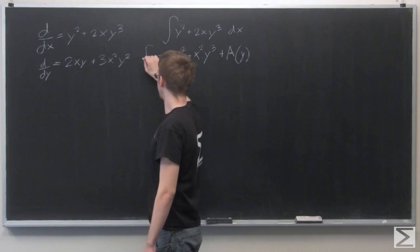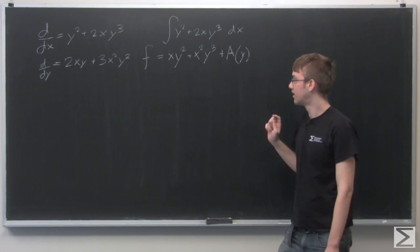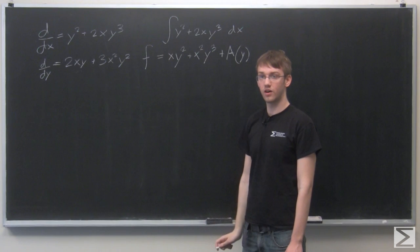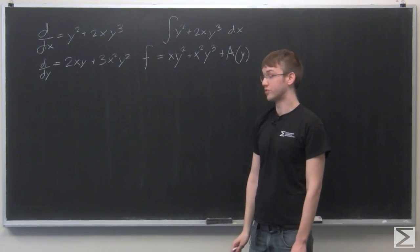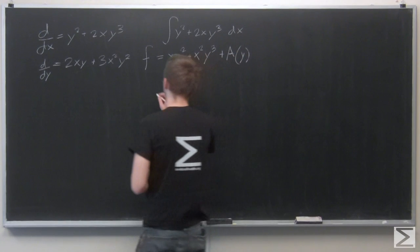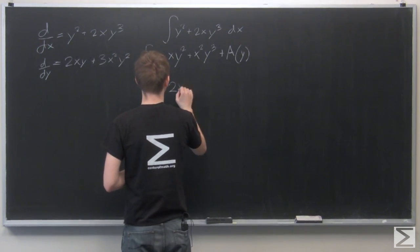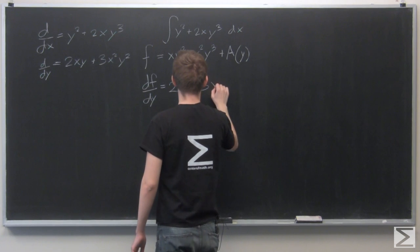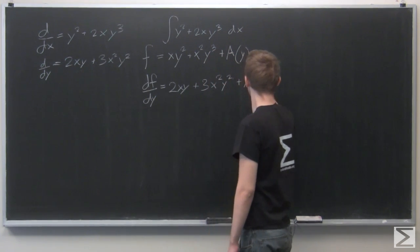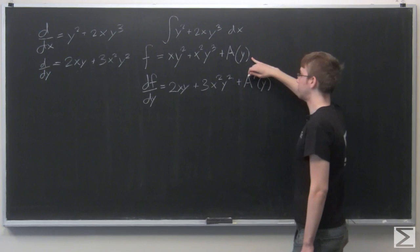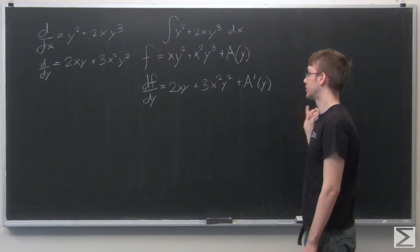So this is our potential function so far, but we've only integrated with respect to x. We need to get what this y term is. If we take the partial derivative of our current f with respect to y now, we can set it equal to our original function with respect to y and compare the two. So to take the derivative of a of y, we need to get a prime of y, which is OK because y is only of a single variable, so we can use the prime notation.